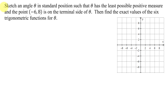In this example, I need to sketch an angle theta in standard position such that theta has the least possible positive measure, and the point negative 6, 8 is on the terminal side of theta. Then I need to find the exact values of the six trig functions for theta.